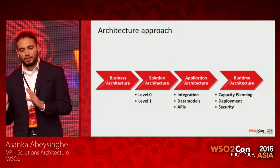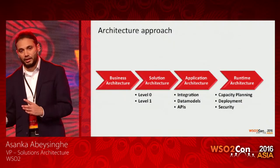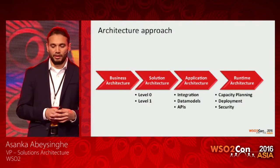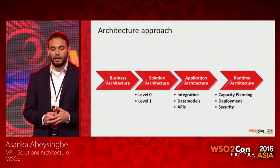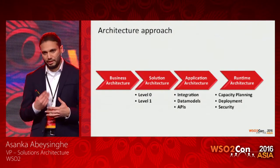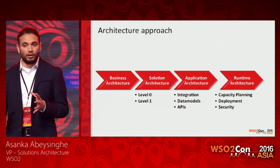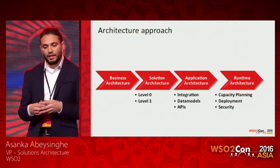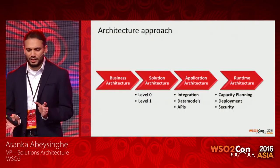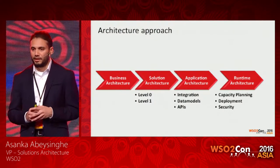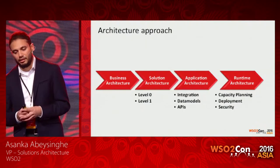The fourth step is to define your runtime architecture — how the system is going to run in a specific data center or cloud environment. During that exercise, we do capacity planning based on parameters like throughput, latency you are expecting from the system, and how complex your business processes are. You define a set of parameters and do a capacity planning exercise. We have a session in the afternoon about capacity planning where you will identify how to do capacity planning in your systems.